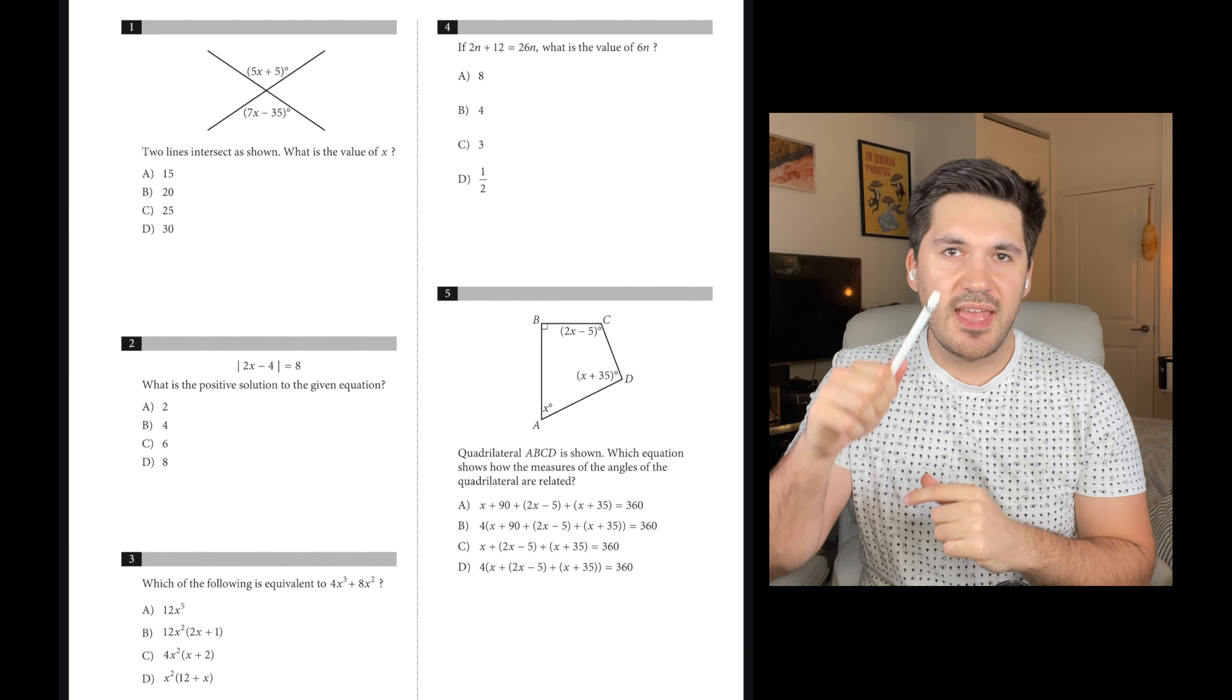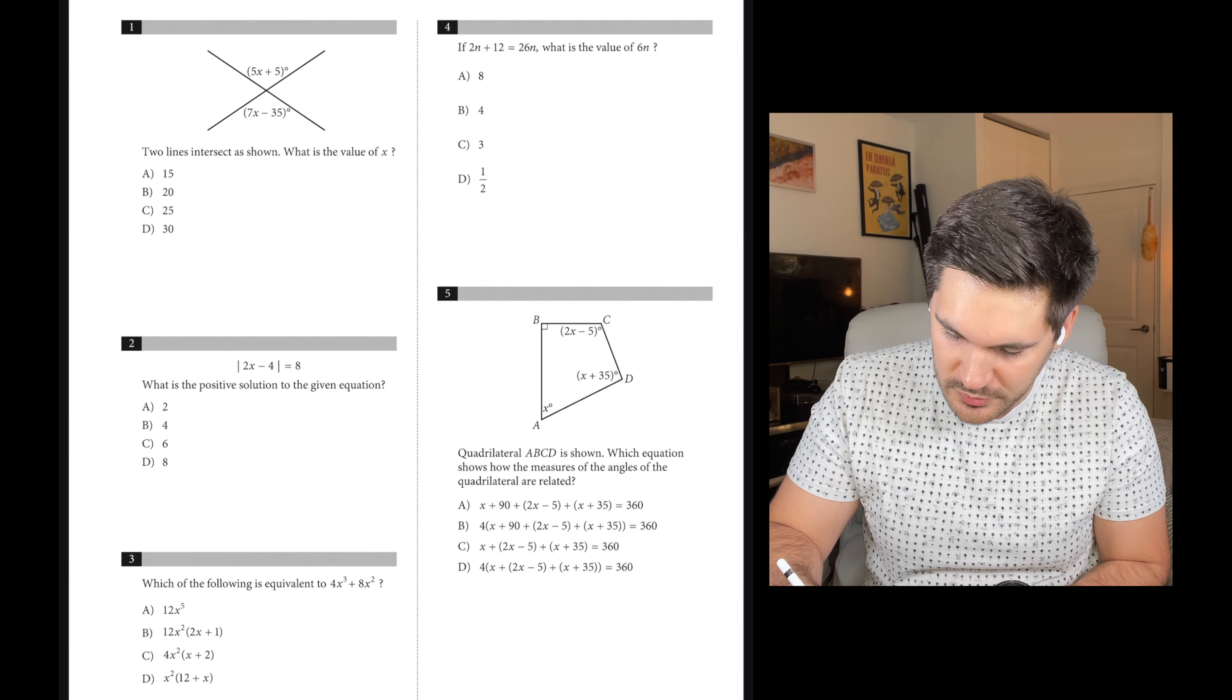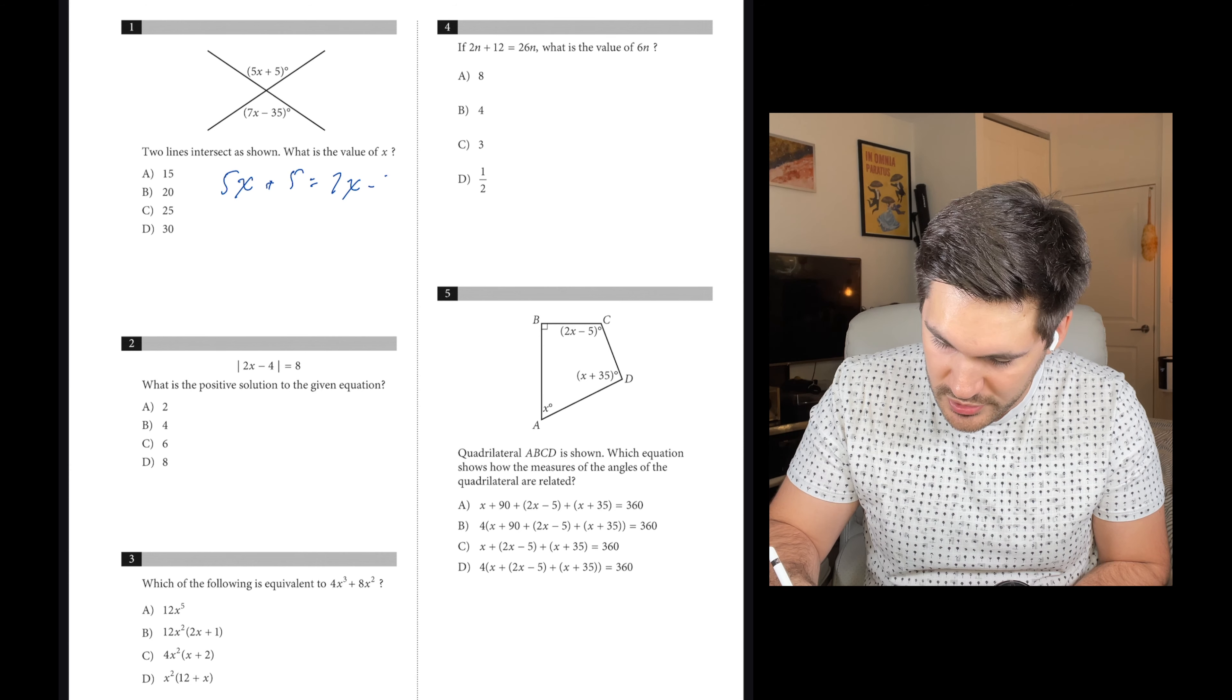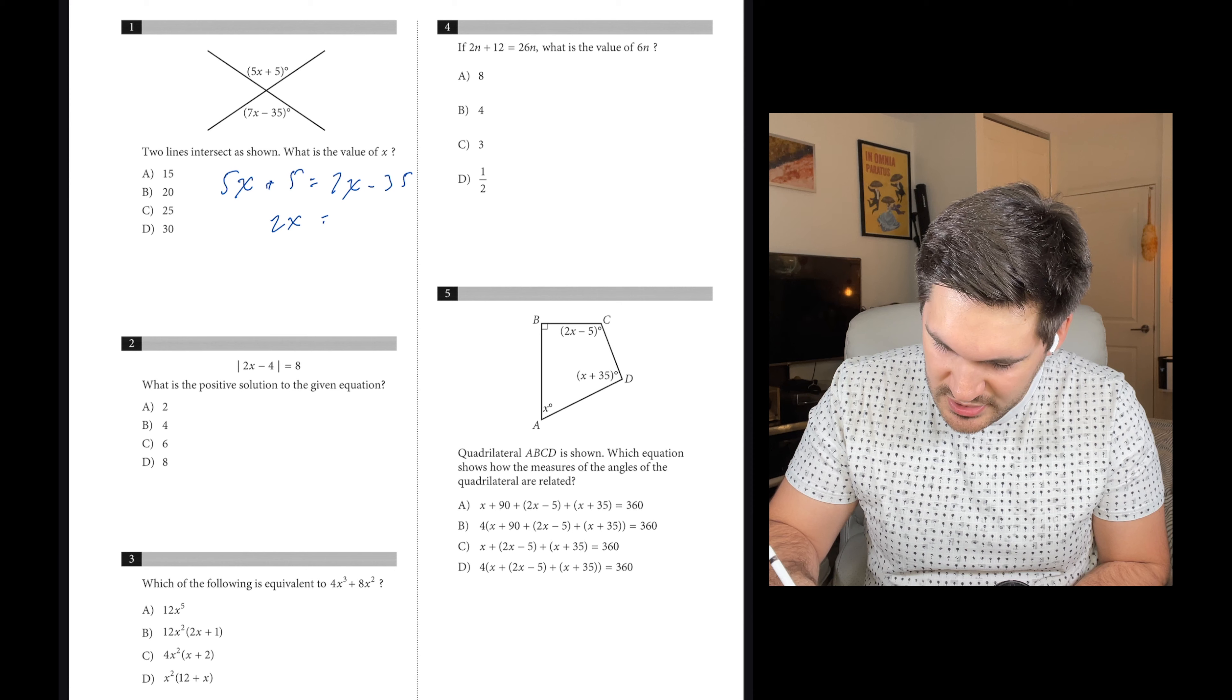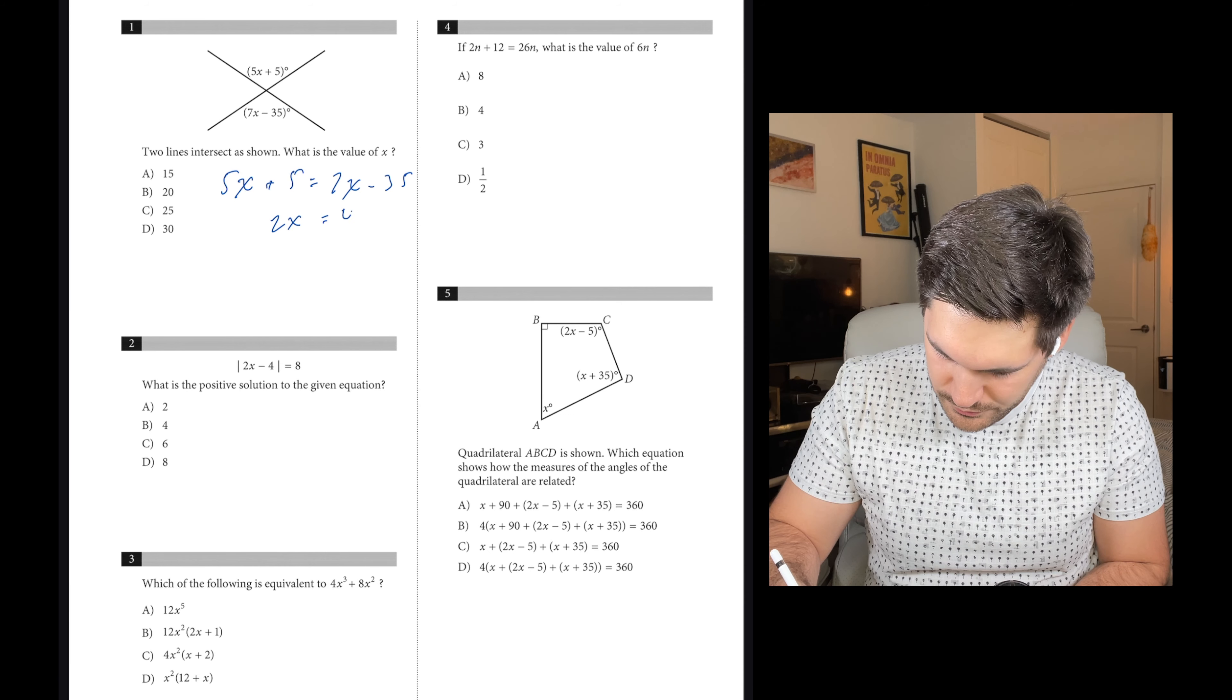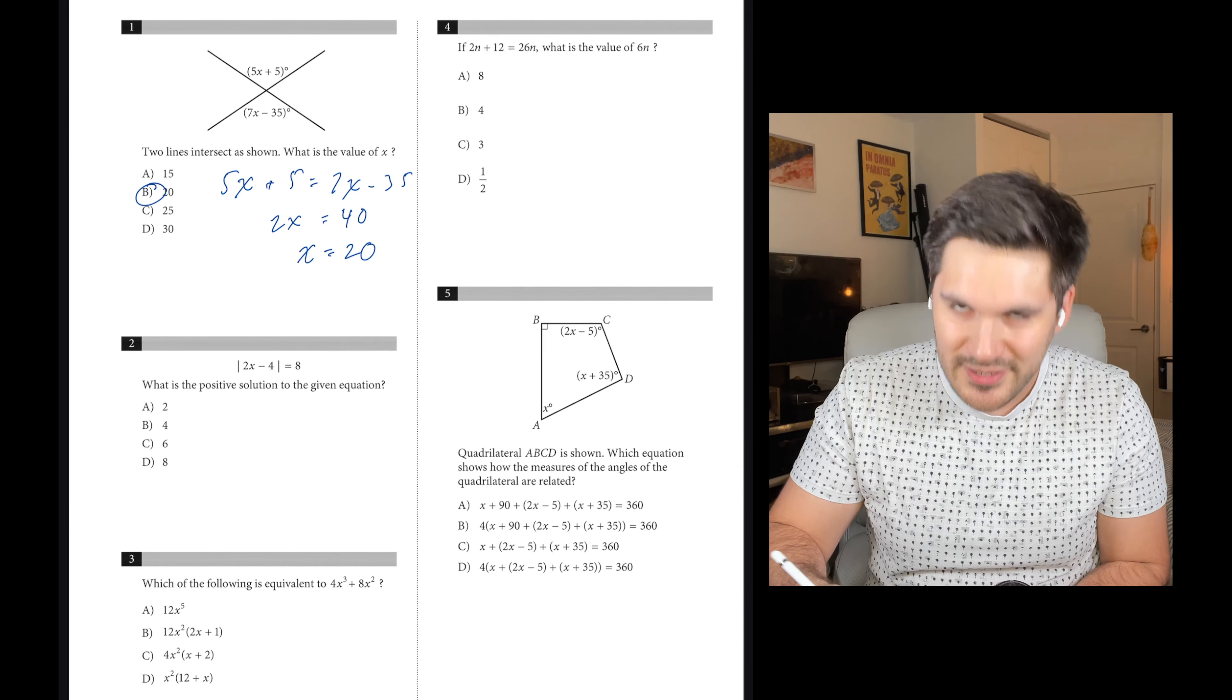When two lines intersect like this, the angles across from each other are vertical angles, and vertical angles are always equal. So we're going to set these two bad boys equal to each other. 5x plus 5 equals 7x minus 35. So 2x equals 40, and x equals 20. So B is the answer.